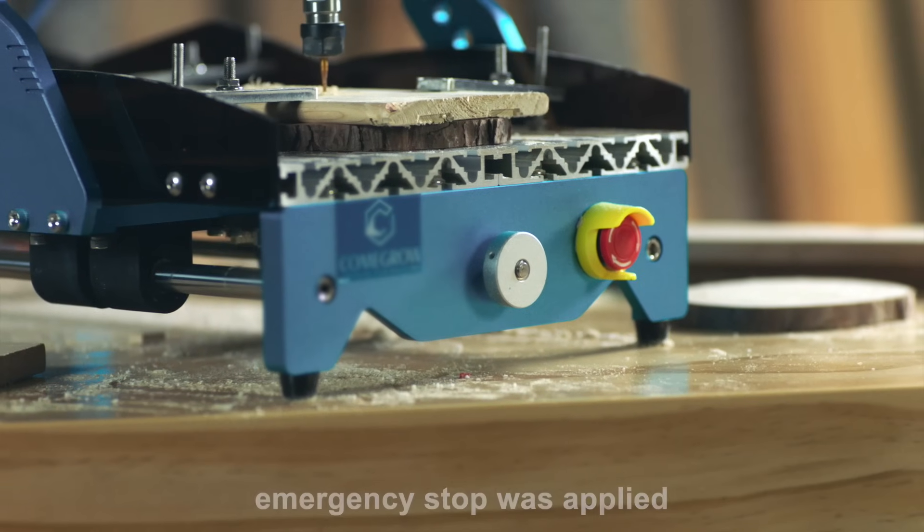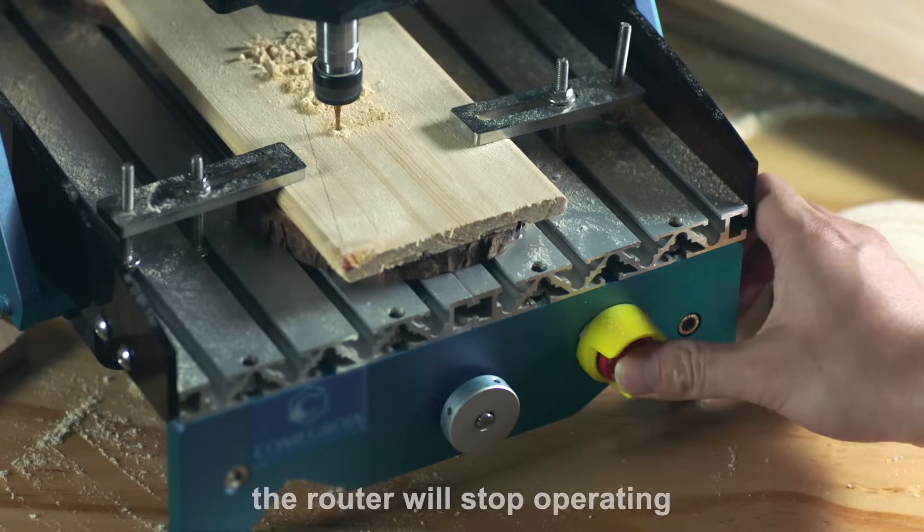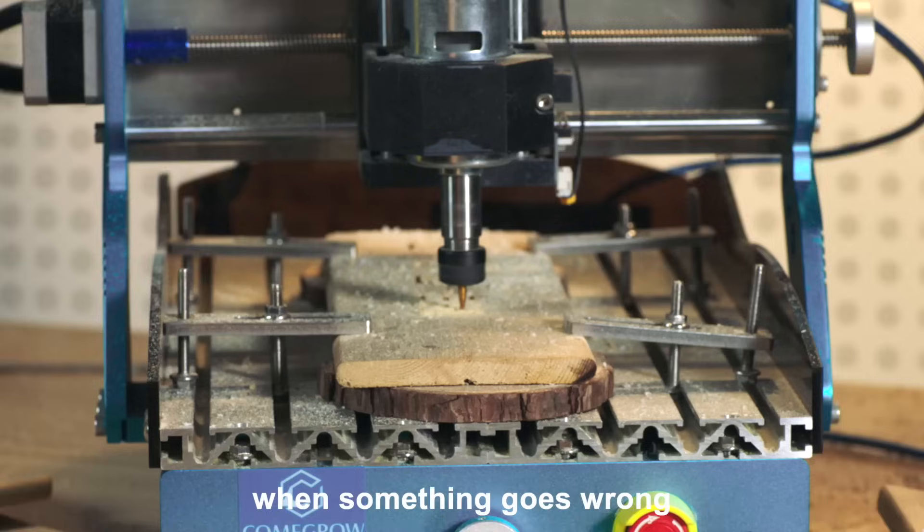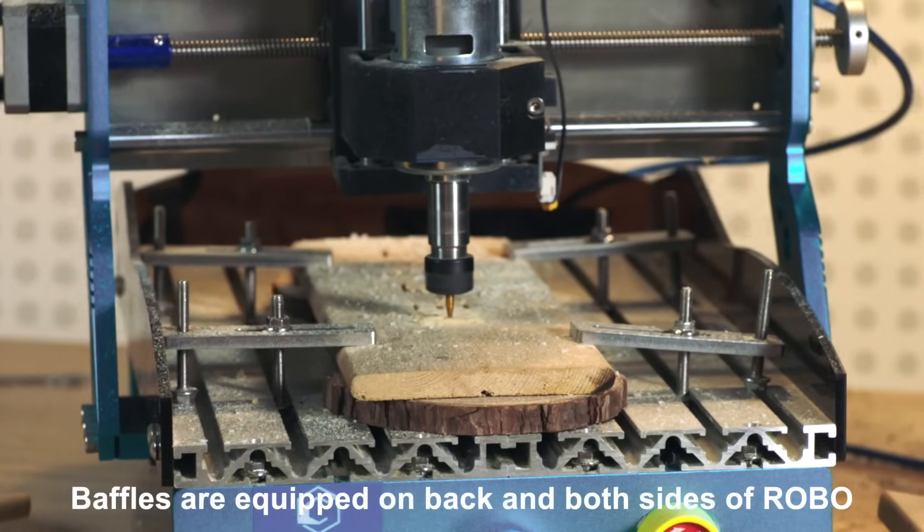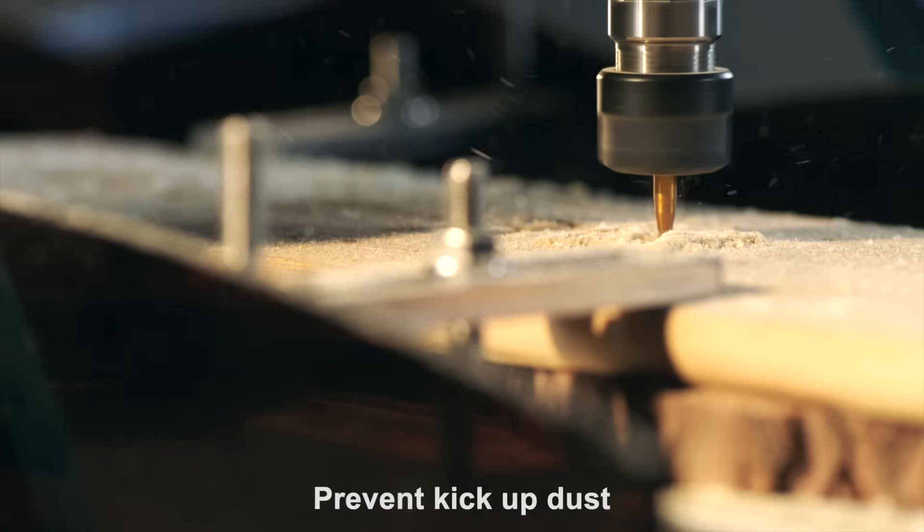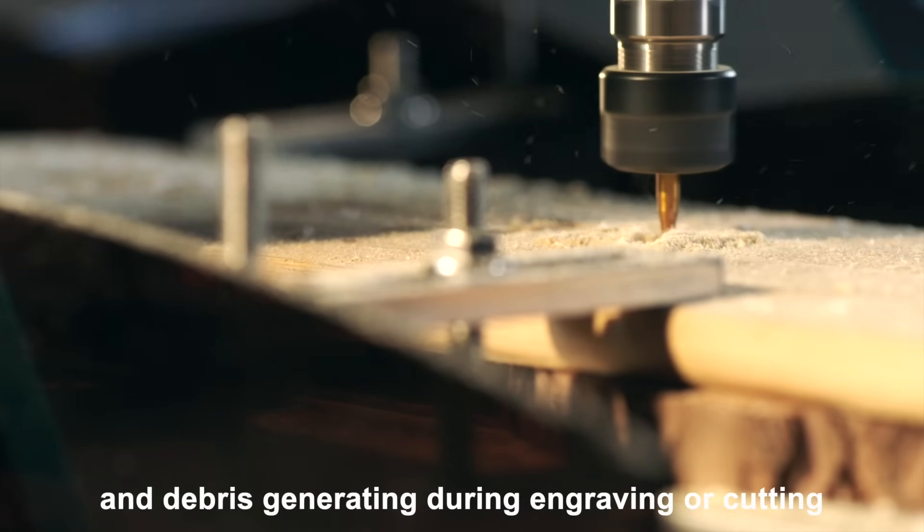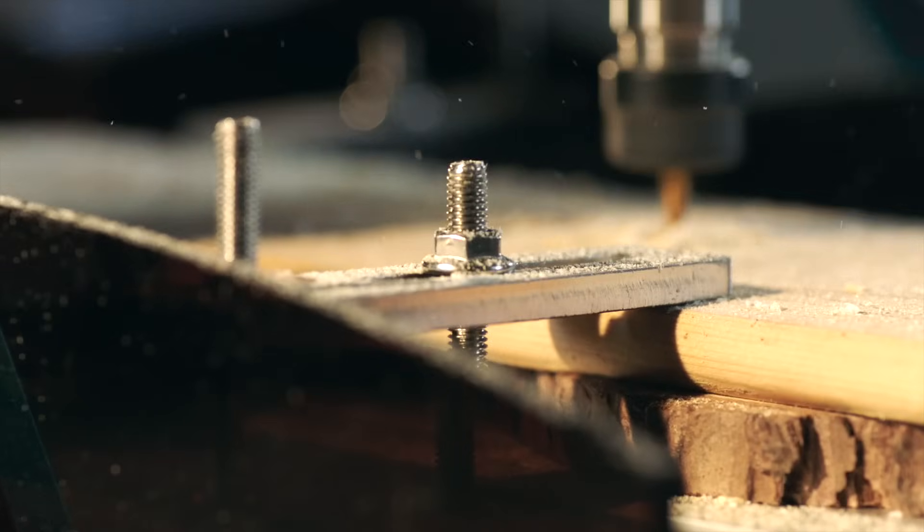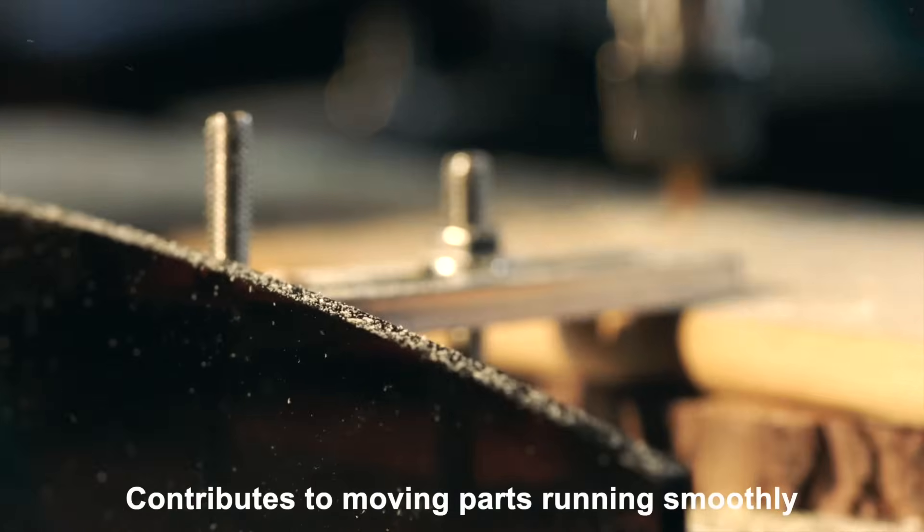Emergency stop was applied. Just one press, the router will stop operating when something goes wrong. Baffles are equipped on back and both sides of Robo to prevent kick-up dust and debris generated during engraving or cutting. Contributes to moving parts running smoothly.